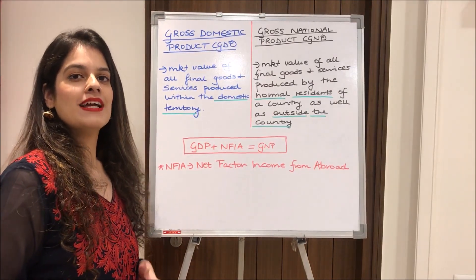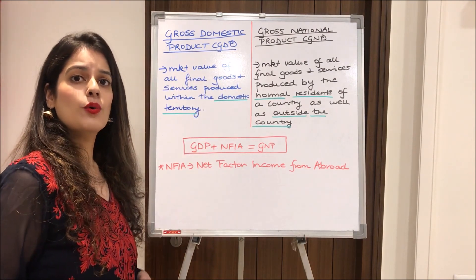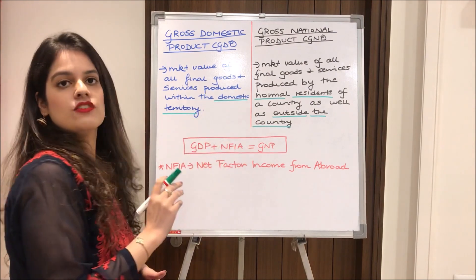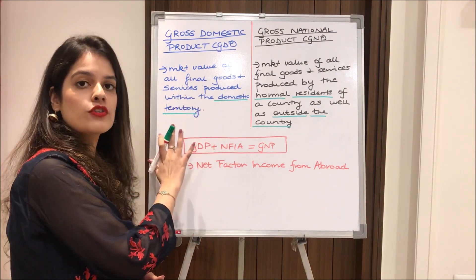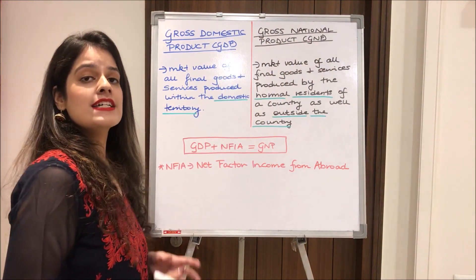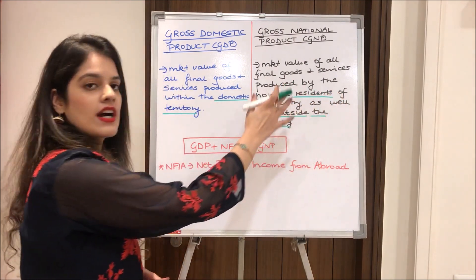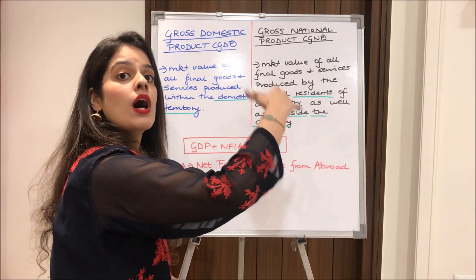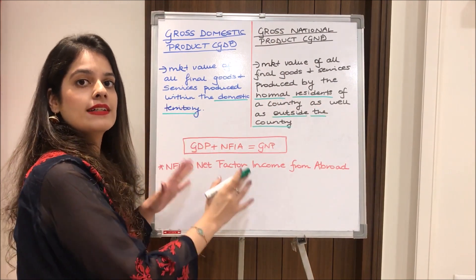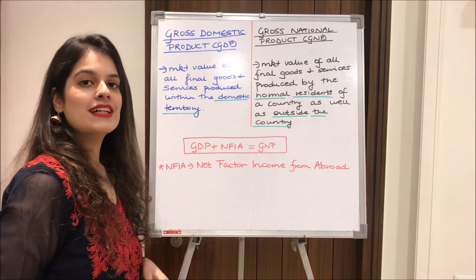Moving ahead to GDP and GNP. GDP, or gross domestic product, is the final value of all goods and services produced within the domestic territory — that is, within the territorial or geographical borders of a country. GNP, or gross national product, is the value of all final goods and services produced by the normal residents of a country as well as those who are outside the country. If we add NFIA — net factor income from abroad — to GDP, we get GNP. That is the key difference between the two.